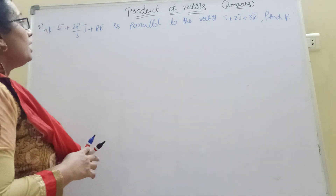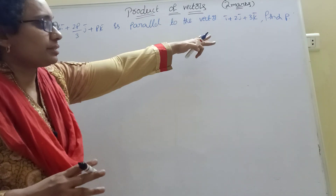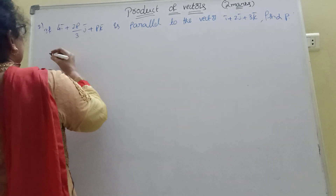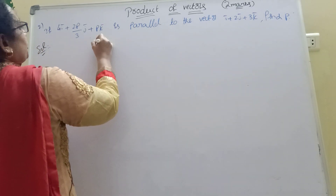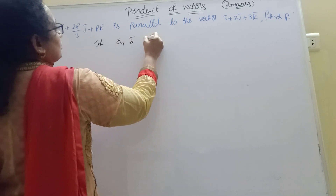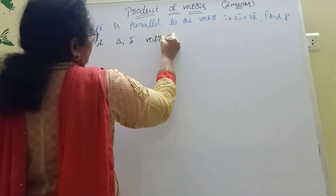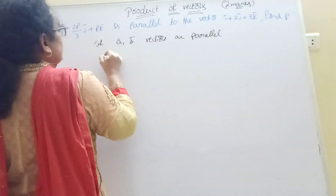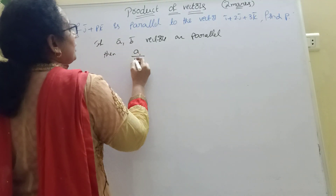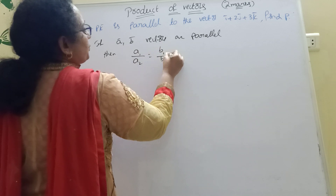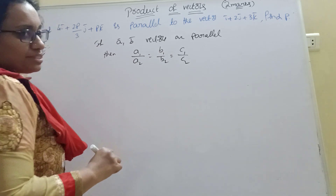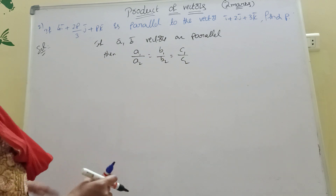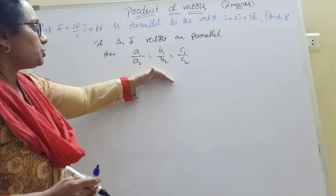Now the second problem: two vectors are given and one is parallel to the other — find P. When two vectors are parallel, the condition is: A1 by A2 equal to B1 by B2 equal to C1 by C2. This is the formula for parallel vectors — you should know this condition.